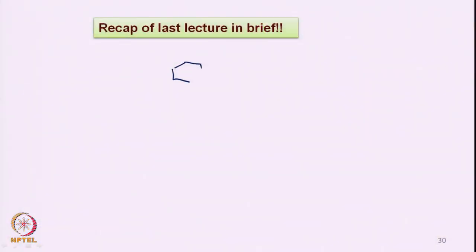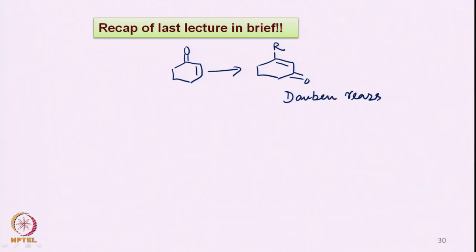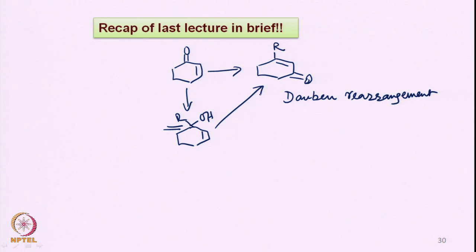One of the oxidizing agents we used for transposing an enone to the corresponding enone with an extra functional group was the Dauben-Michno rearrangement, where we took the alcohol and reacted it with PCC — pyridinium chlorochromate. That oxidizing agent allowed the oxidation of the tertiary alcohol, which can be formed if we add the corresponding alkyl or aryl group and then carry out this Dauben-Michno rearrangement.